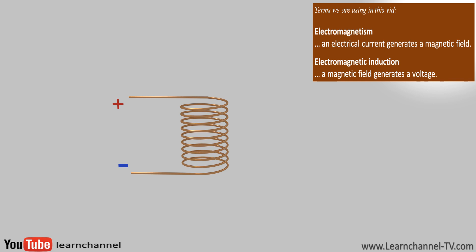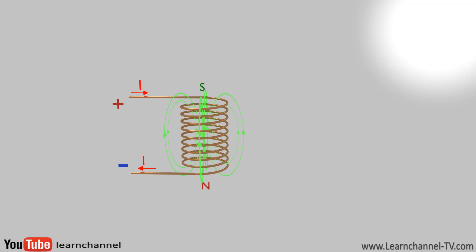For better understanding, let's consider just the primary coil. As soon as we connect this coil to DC voltage, a current flows through the coil and causes a static magnetic field. The direction of the magnetic lines can be determined by the right-hand rule. But with this static magnetic field, we cannot get electromagnetic induction. We need AC voltage to get an alternating magnetic field.